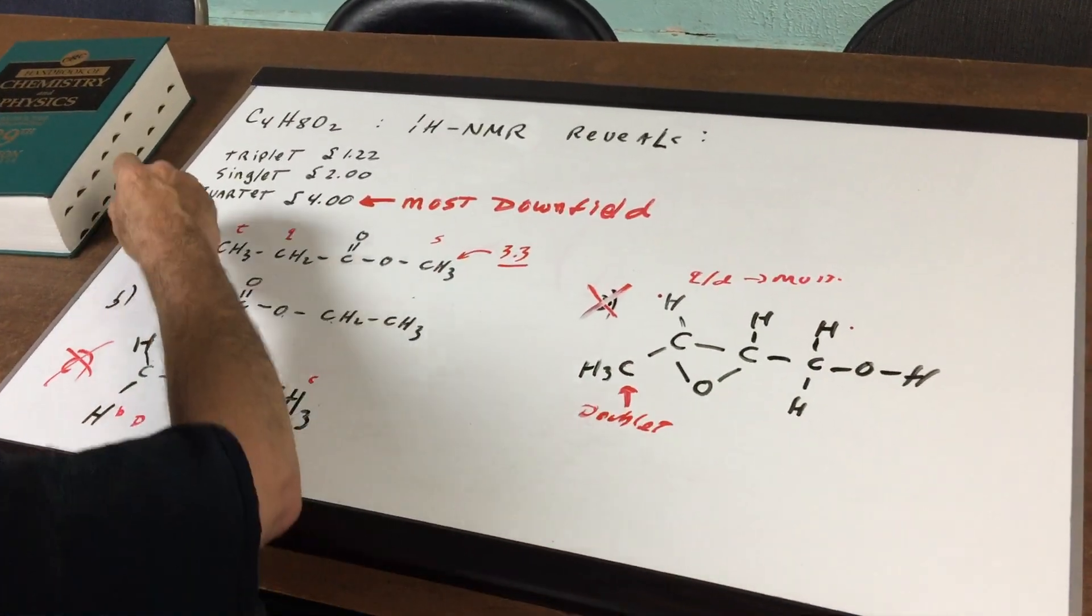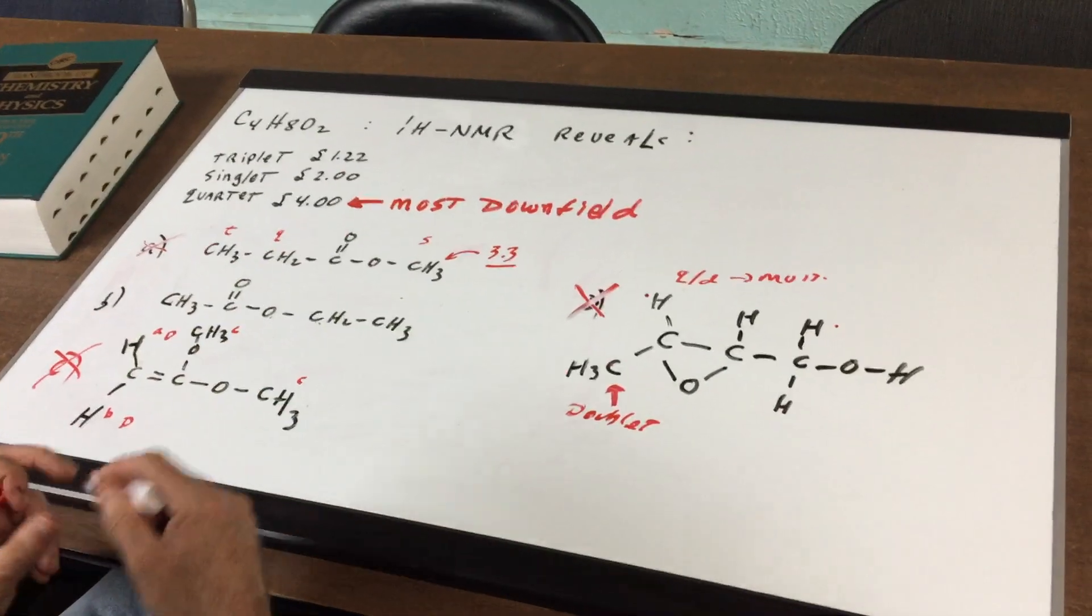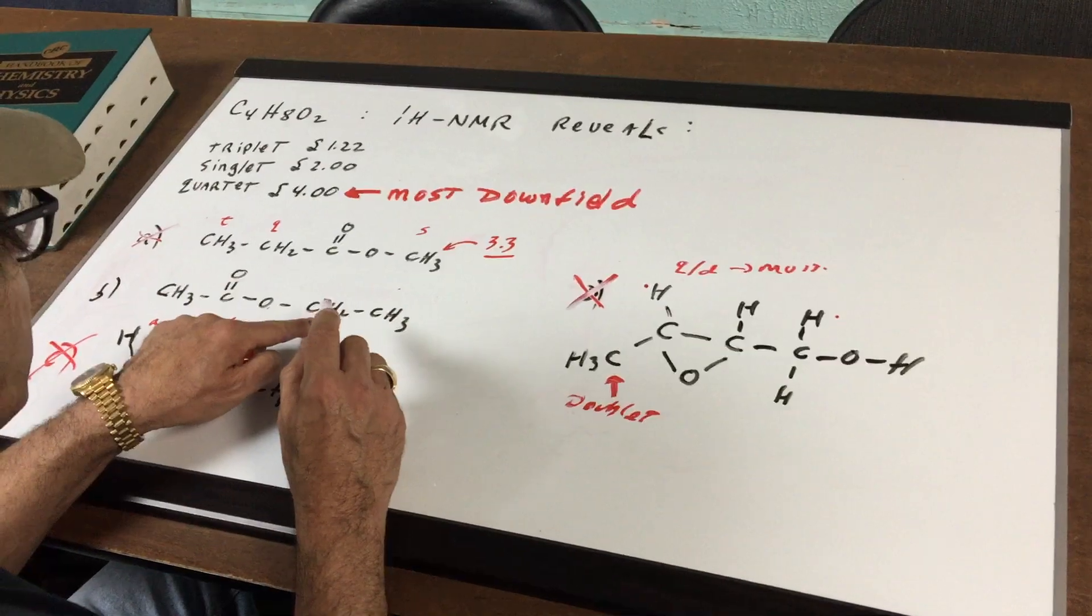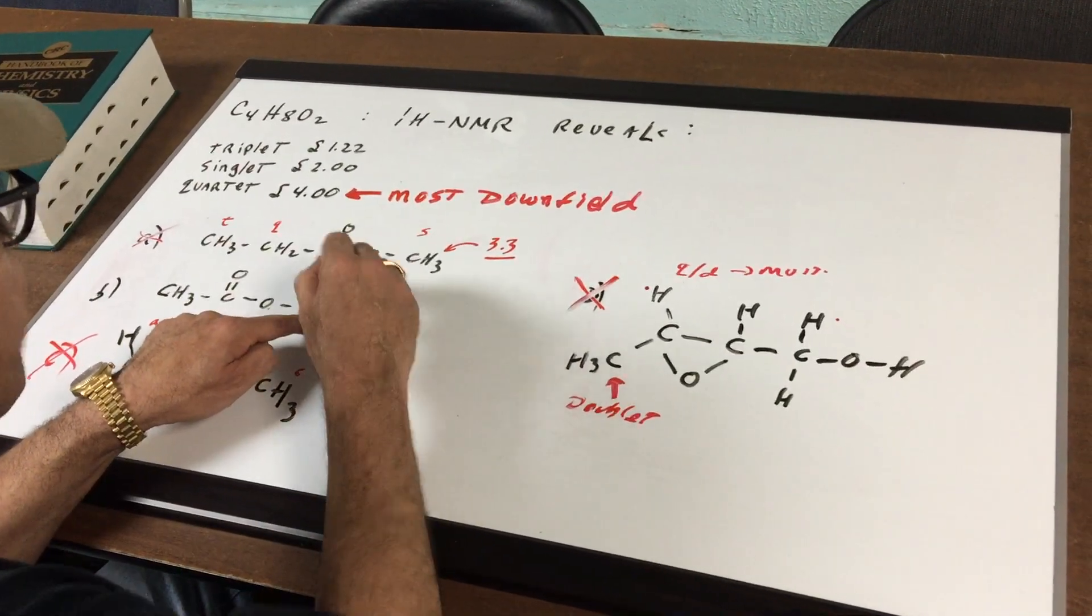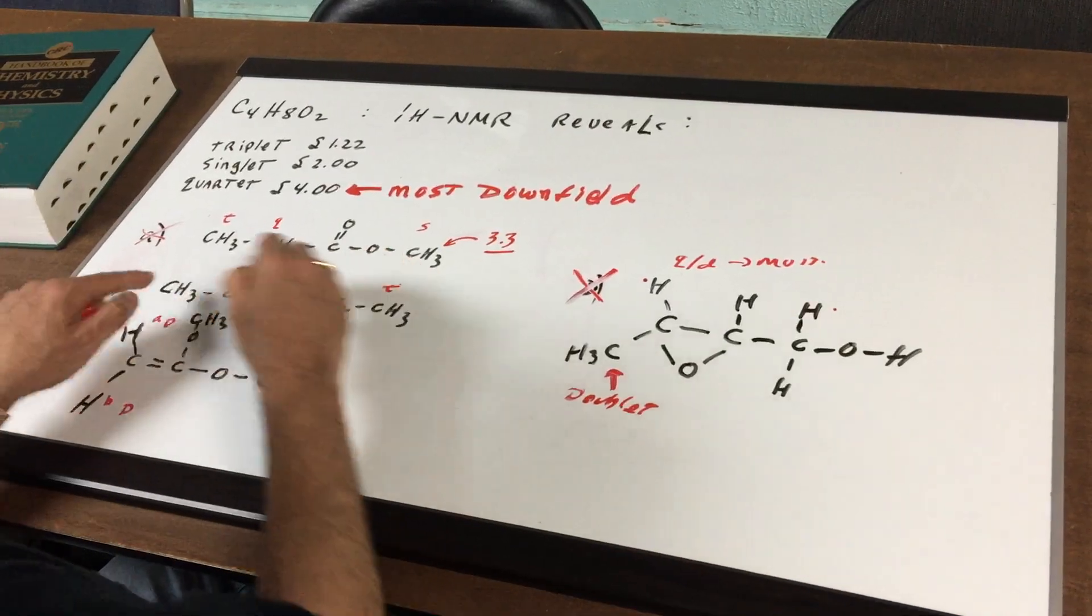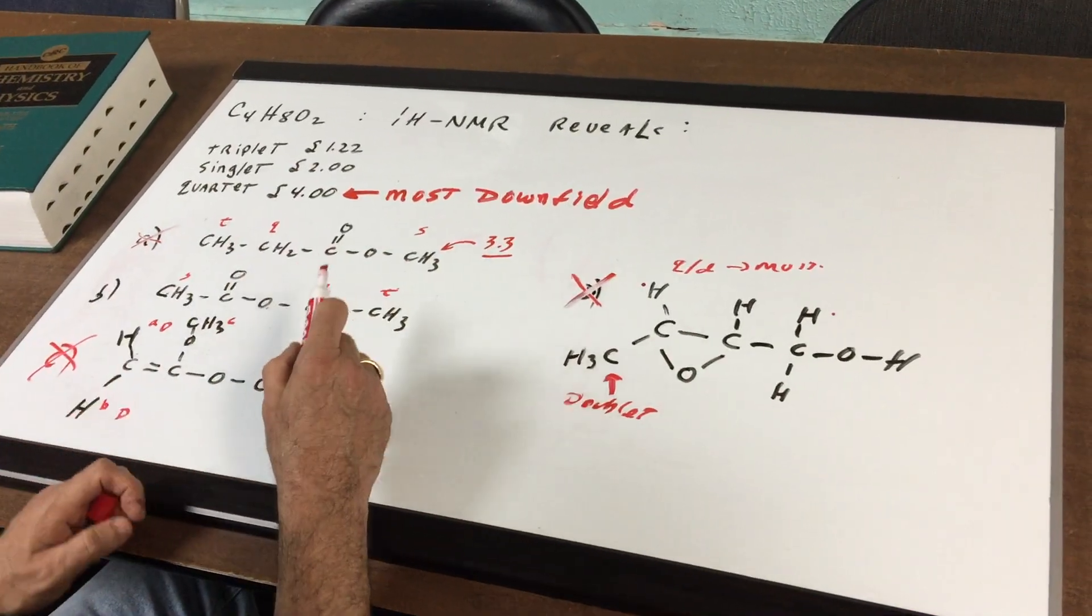So I've got all these eliminated, but let's look at choice B. In choice B, the most downfield signal would be this signal from here. This would be the quartet, this would be the triplet, and this would be the singlet.